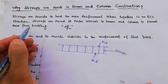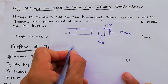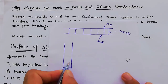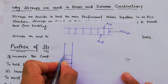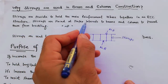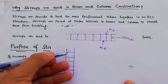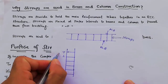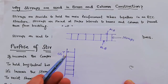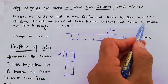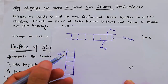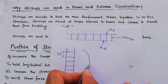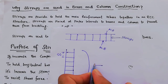Stirrups are placed at proper intervals in beam and column to prevent them from buckling. Proper intervals means we use stirrups at a specific spacing — that is, a center-to-center distance. In a column, when we don't provide stirrups, the column can deform like this — this is called buckling.